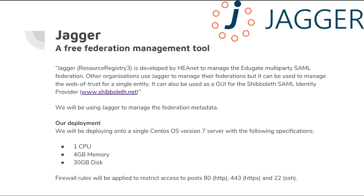For our use case, we'll just be using Jagger to manage the federation metadata for a single mesh federation. For our deployment, we've chosen to deploy it onto a single CentOS 7 server. The specifications are a single CPU, about 4 GB memory, and about 30 GB disk space. You'd need to open up port 80, port 443 for HTTP and HTTPS — everything gets transformed to port 443 — and port 22 for SSH, though that doesn't need to be open to the internet.